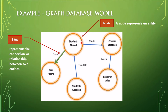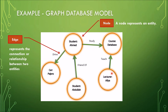As you can see, we have a student node with a relationship to a car node — the relationship is named 'Drive'. Student Hamed drives a car, which is a Pajero. There is another edge: Hamed is studying the database course. The student Abdullah is a friend of Hamed. The last relationship is between the lecturer node and the course node — lecturer Aliyah teaches the database course. This is how graph database models work, based on the mathematical concept of graphs.